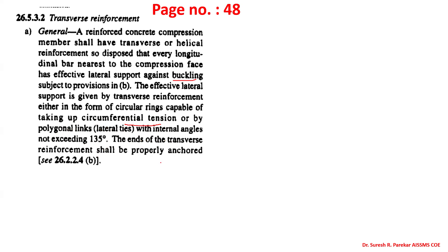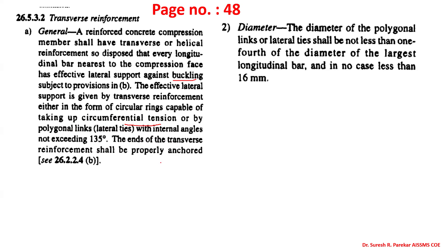You can refer to figure 26.2.24b. The diameter of bar for polygonal links or lateral ties is one-fourth of the diameter of the largest bar, or 6 mm, whichever is greater. Note: this value is 6, not 16.